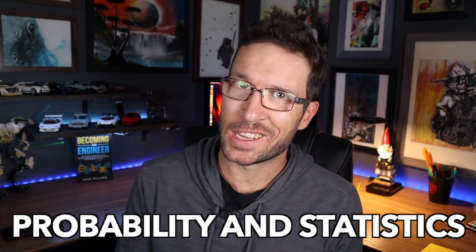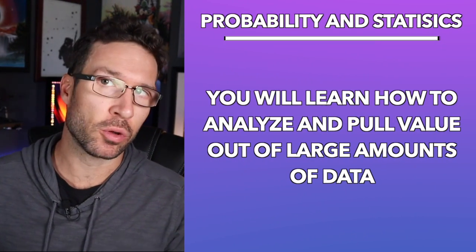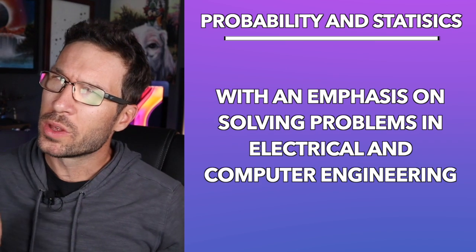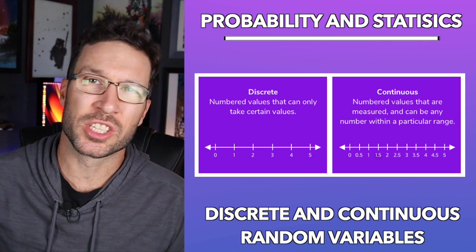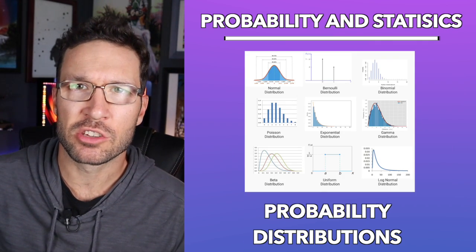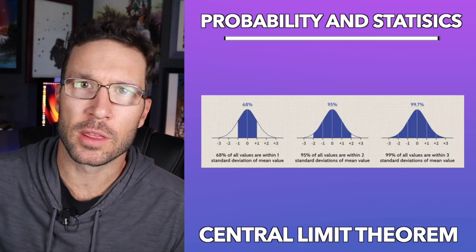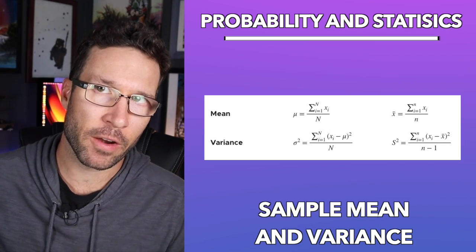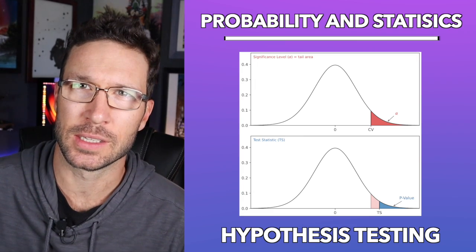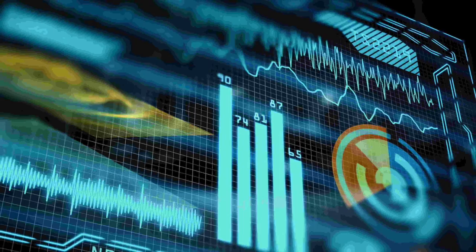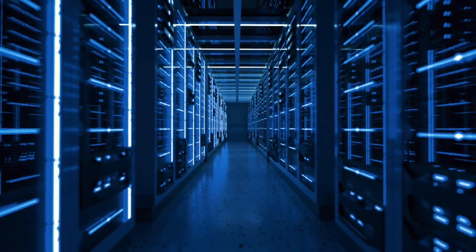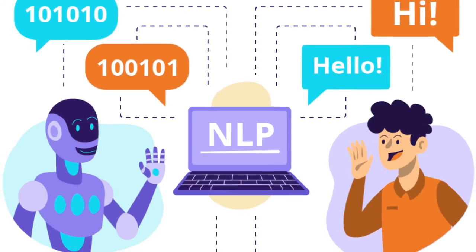Next up we have probability and statistics. In this class you're going to learn how to analyze and pull value out of large amounts of data, with an emphasis on solving problems in electrical and computer engineering. Topics include discrete and continuous random variables, probability distributions, the law of large numbers, central limit theorem, sample mean and variance, correlation and regression, and hypothesis testing. Applications in computer science include process control, speech recognition, machine learning and data science, data analysis and visualization, database management, networking, simulation and modeling, and language processing.